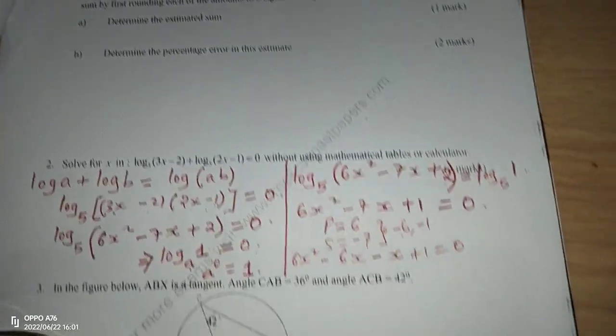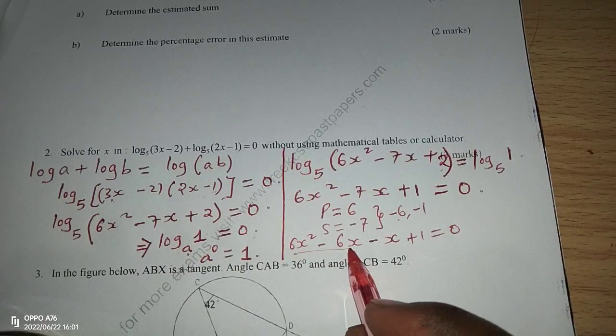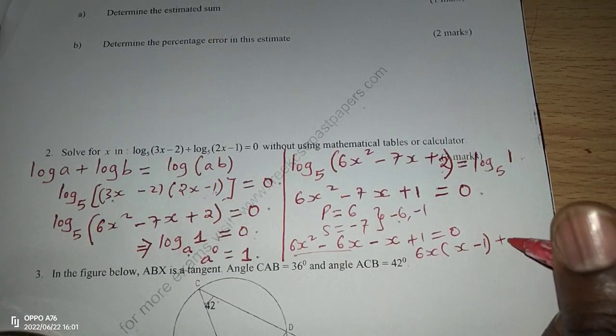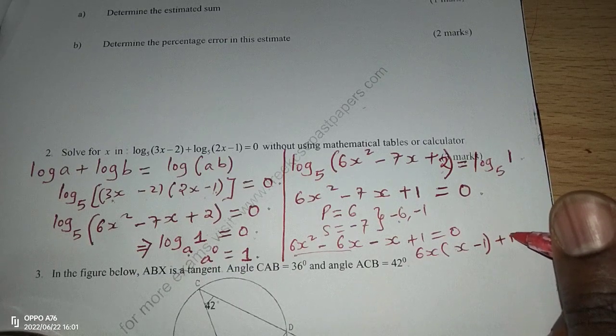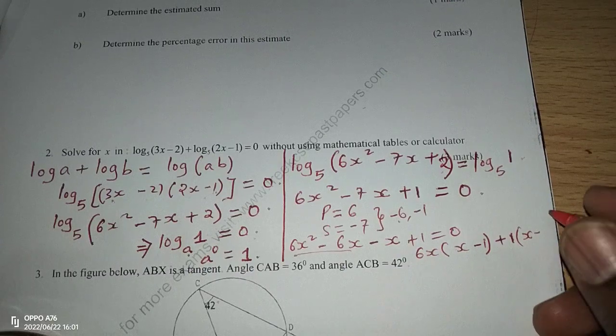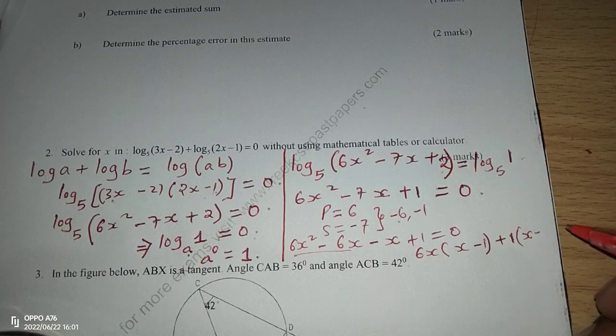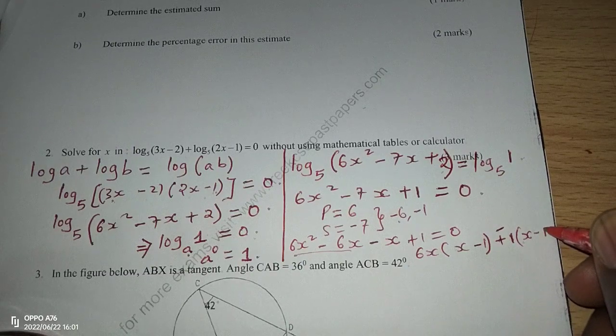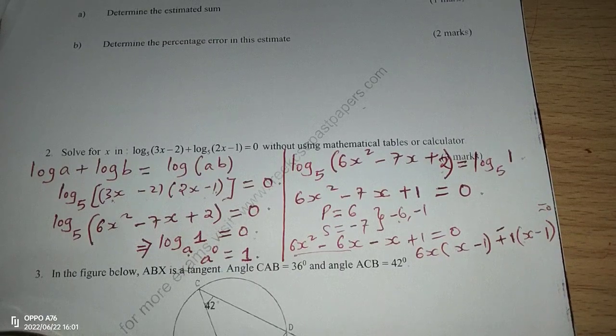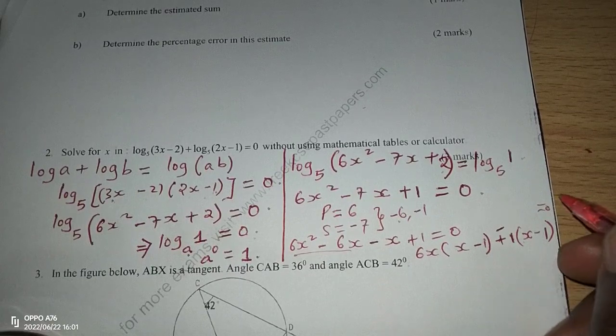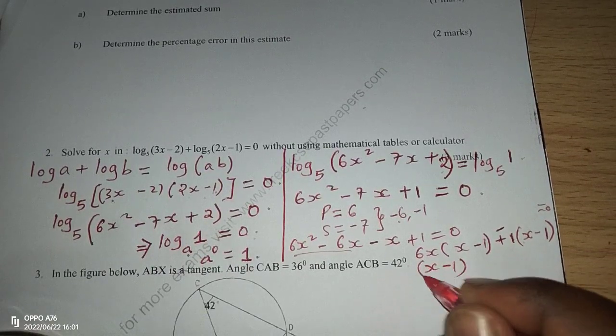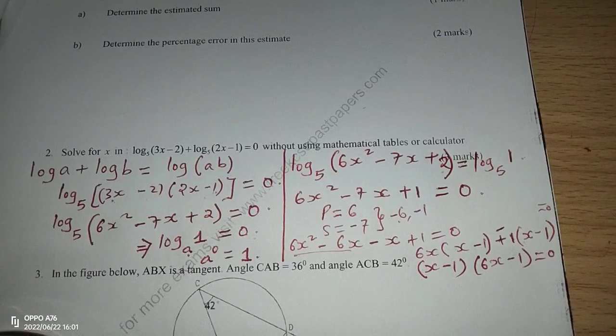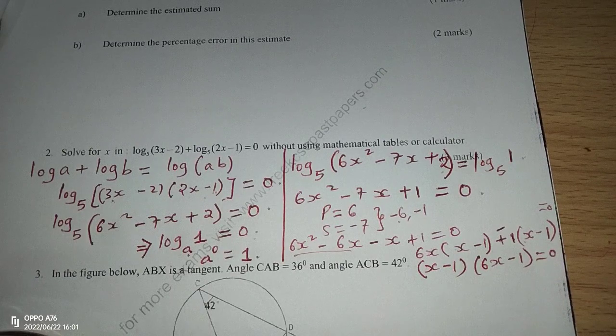So when we factorize in every two terms, we will find in the first case we have 6x being common. So we will remain with x minus 1, then positive 1, so that we remain with x minus 1. Okay, this one should be negative. When we factorize negative 1, we remain with x minus 1. Yeah, so this should be negative 1 equals to 0. So now before we equate the roots, then we can have x minus 1 is the common root, then 6x minus 1 equals to 0.